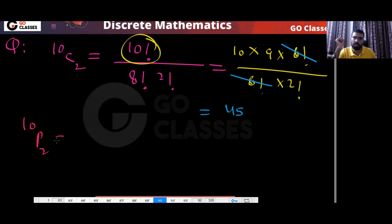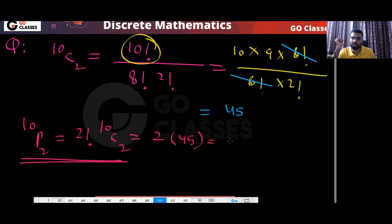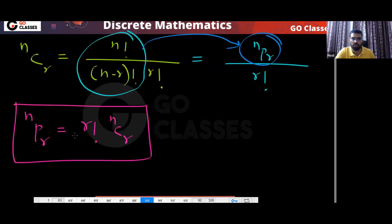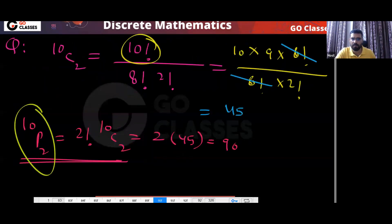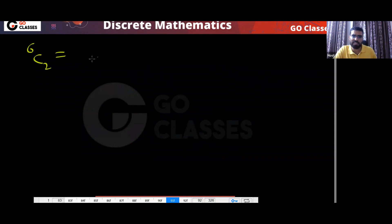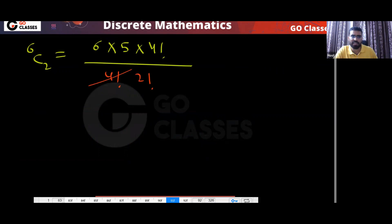What is 10P2? That is 2 factorial into 10C2, because NPR equals r factorial multiplied by NCR. So that is 2 multiplied by 45, which is 90. For 6C2: 6 factorial divided by 4 factorial into 2 factorial — write 6 factorial as 6 into 5 into 4 factorial, cancel the 4 factorials, and you get 6 into 5 divided by 2, which is 15.